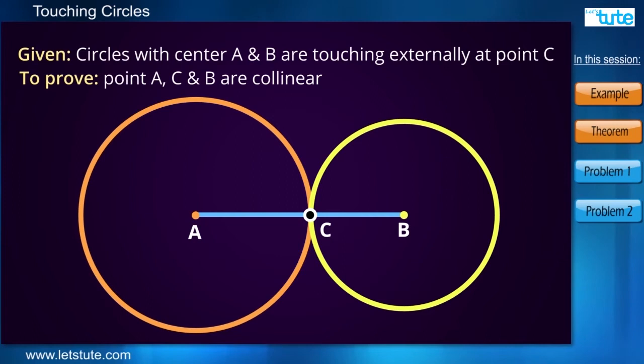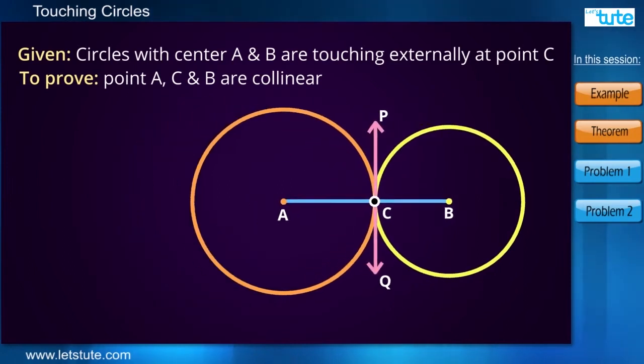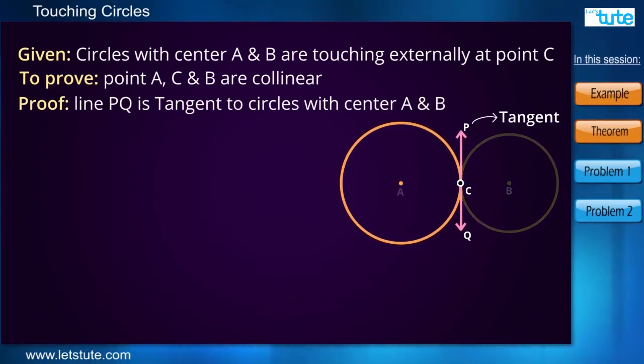So in order to prove this, we are going to take the help of the road which was passing through the center of buildings, correct? So we will name the road as line PQ, which passes through only point C. And then we can join AC and BC. If we notice that the line PQ is nothing but tangent to the circle with center A, and it is also a tangent to the circle with center B.